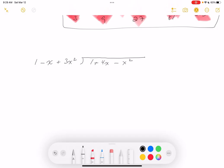So to get the ones to match, it's going to be 1. So we get 1 minus x plus 3x squared. Subtract. What do you get? 5x minus 4x squared.